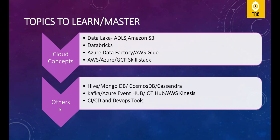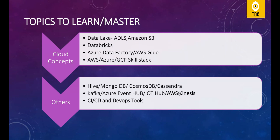Beyond the core cloud services, learn about NoSQL databases — MongoDB, Cosmos DB, and Cassandra. Understand what NoSQL is, why we use it, and its basic concepts. Also understand Kafka, Azure Event Hub, and IoT Event Hub. If you are using AWS, learn AWS Kinesis. These technologies help you process real-time data. As a data engineer, you will not only process batch data but also real-time data, so make sure to include both batch processing and real-time technologies in your learning checklist.